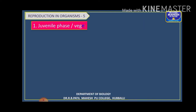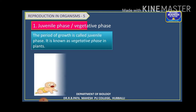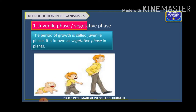The first phase is the juvenile phase or vegetative phase. It is nothing but the pre-reproductive phase — the period of growth from the birth of an individual up to its reproductive maturity. In plants, this juvenile phase is called the vegetative phase.